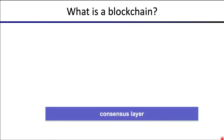So let's talk about what a blockchain is. In my mind a blockchain is made up of four separate layers. The bottom layer is what's called the consensus layer, and this is what's used for the parties to coordinate and agree on the current state of the chain.